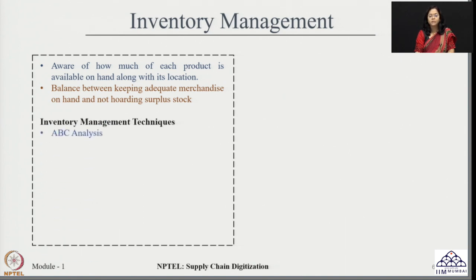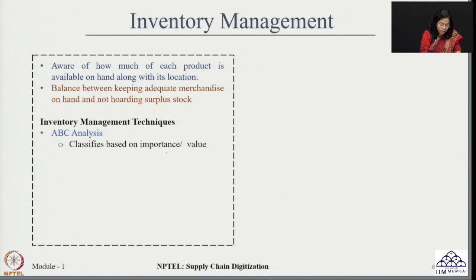What are the different famous inventory management techniques? The most prominent and famous is ABC analysis, which classifies products based on their importance or value into three categories: A, B, or C. This is a well-known technique used at many companies.